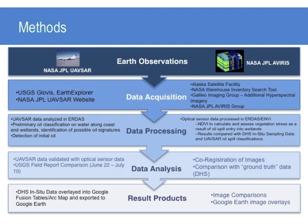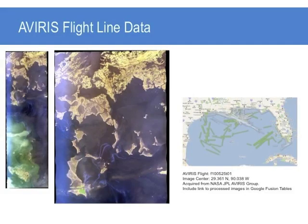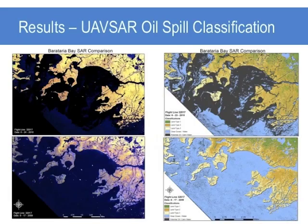A five-class unsupervised classification was performed on each of the flight lines' color-composite images. The UAV SAR data was validated with optical sensor data and compared with the USGS field report from June 22 through July 10, 2010. The results include DHS in-situ data overlaid into Google Earth with the processed UAV SAR and AVIRIS imagery. The oil spill entered the Barataria Bay location on May 23, 2010; June 21, 2010 shows a closer image of the extent of entry into the study area. UAV SAR data from 2009 was compared to 2010 after the oil spill.